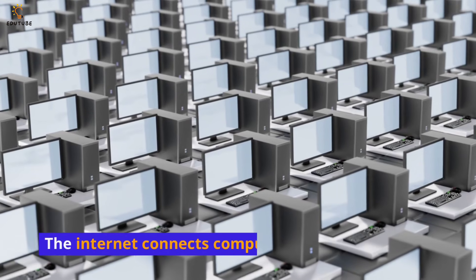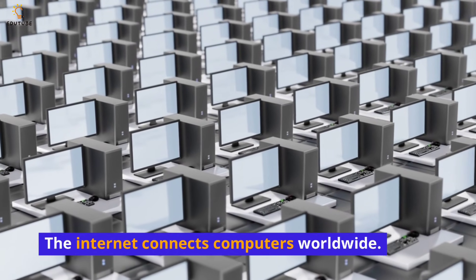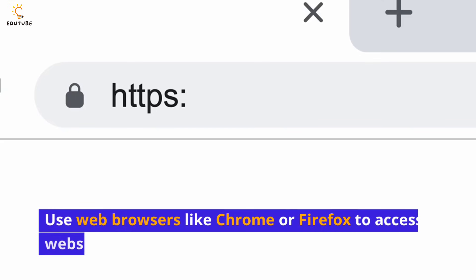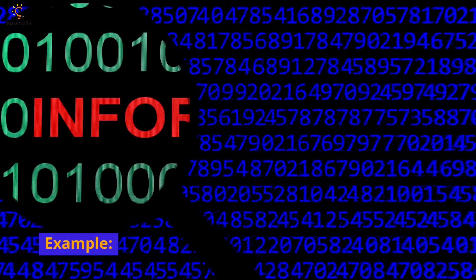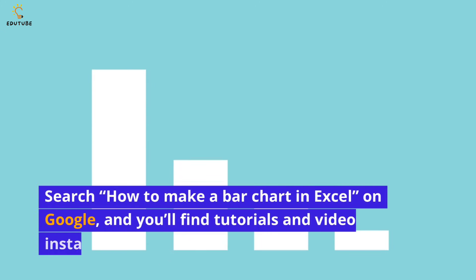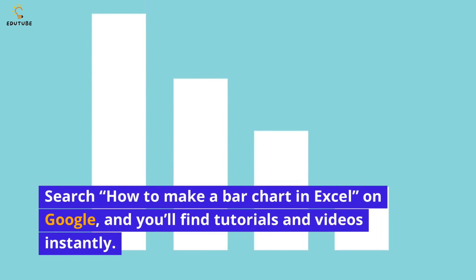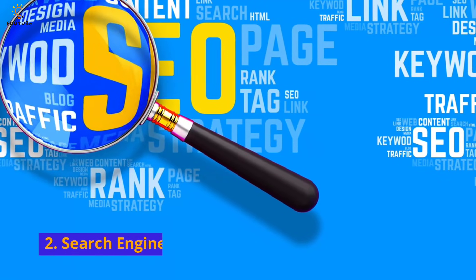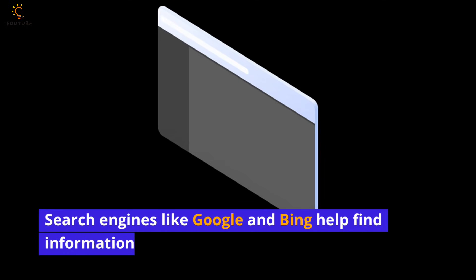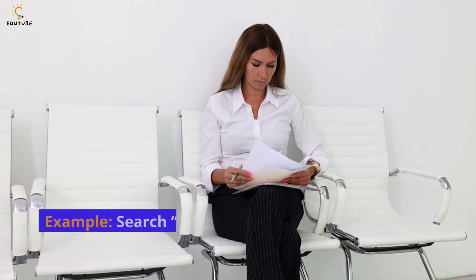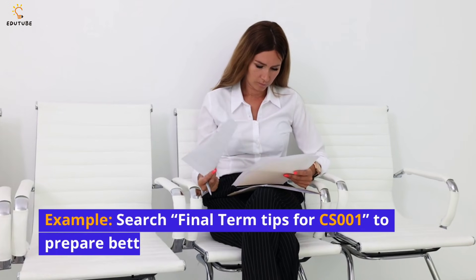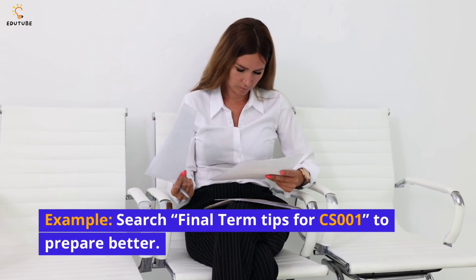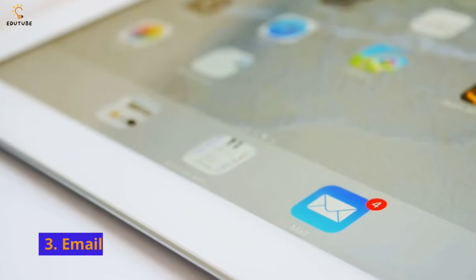Module 6: Internet and Email. Internet basics — the internet connects computers worldwide. Use web browsers like Chrome or Firefox to access websites. For example, search 'how to make a bar chart in Excel' on Google and you'll find tutorials and videos instantly. Search engines like Google and Bing help find information — for example, search 'final term tips for CS001' to prepare better.